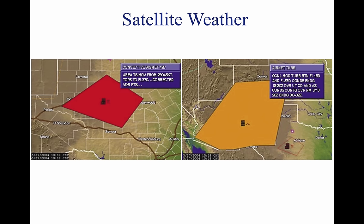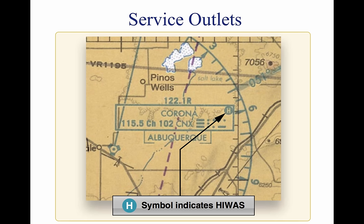Service outlets are government or private facilities that provide aviation weather services. Major service outlets are the Automated Flight Service Station (AFSS), the Transcribed Information Briefing Service (TIBS), the Direct User Access Terminal Service (DUATS), the Enroute Flight Advisory Service or Flight Watch, the Hazardous In-Flight Weather Advisory (HIWAS), and the Transcribed Weather Broadcast (TWEB).